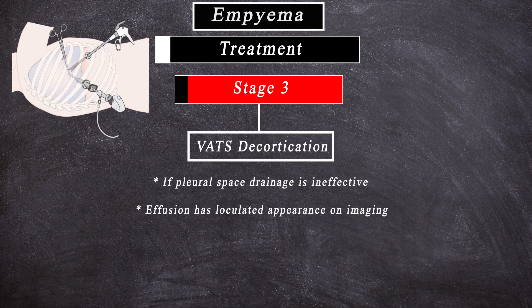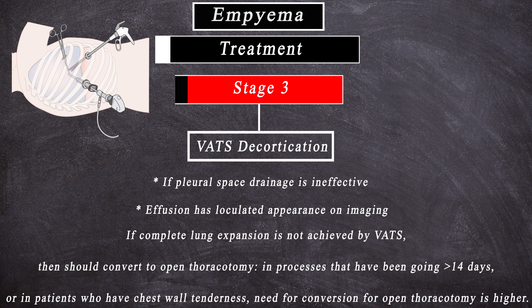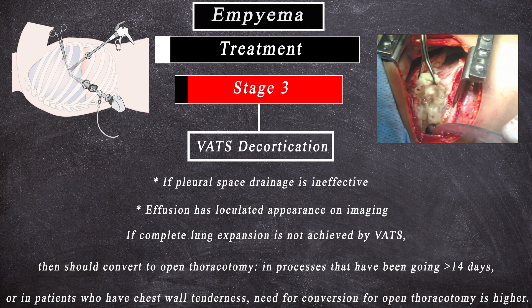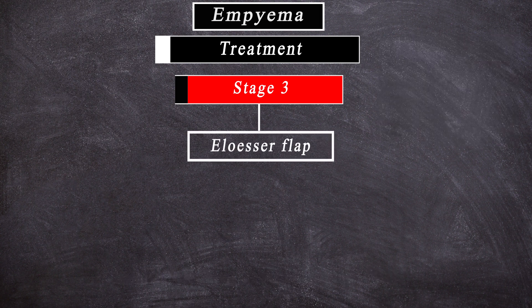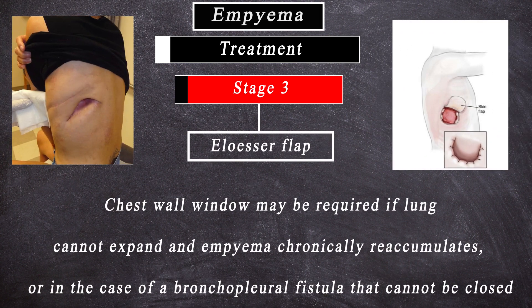If complete lung expansion is not achieved by VATS, then conversion to open thoracotomy is required. In processes that have been ongoing for more than 14 days, or in patients who have chest wall tenderness, the need for conversion to open thoracotomy is higher. Open decortication is indicated for late Stage 2, Stage 3, and incomplete lung expansion with VATS. A chest wall window may be required if the lung cannot expand and empyema chronically reaccumulates, or in the case of a bronchopleural fistula that cannot be closed.